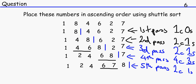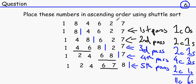In total, we have done 11 comparisons and six swaps. On Bubble Sort, we also did six swaps, but we did 20 comparisons — 20, compared to 11. So Shuttle Sort at this current moment is more efficient than Bubble Sort. Thank you for watching.